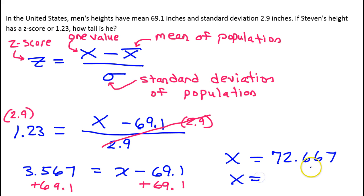And this would round, I'm going to round this to one decimal place. So this would be 72.7. So that should be your final answer. Alright, that would be Stephen's height.